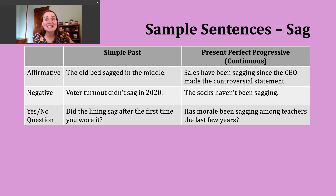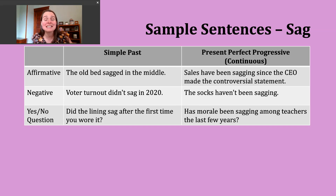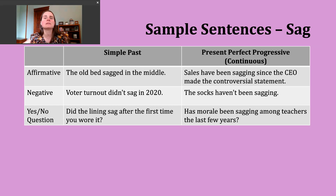Now let's practice our verb of the day sag in a couple different verb tenses. Today we'll practice the simple past tense and the present perfect progressive. We use the simple past tense to talk about a completed action at a known point in the past. Many times in the simple past tense, we'll see time signals — words like 'yesterday,' 'last month,' or even a specific date in the past. But you won't see that in every single simple past tense sentence; it's just a good indication as we're having a conversation or reading a longer passage.